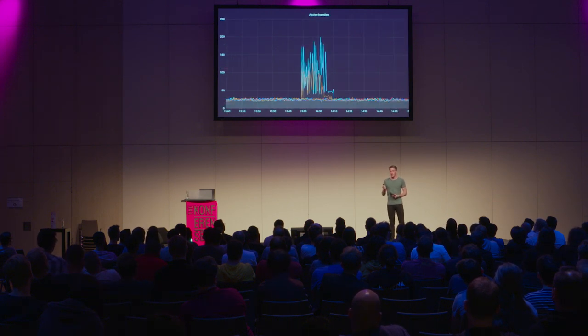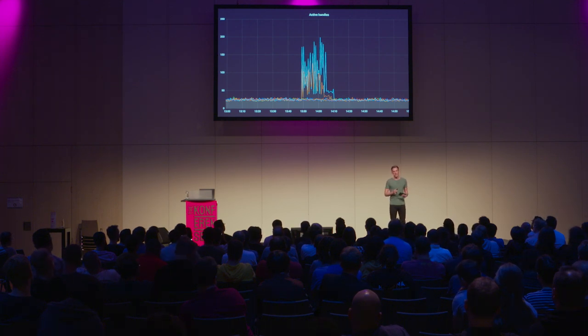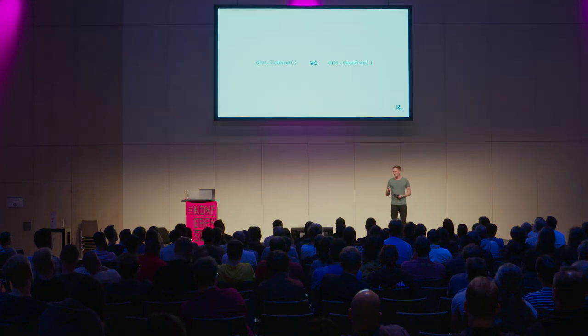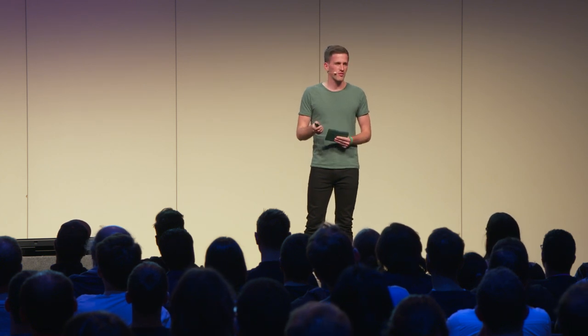This also explains why we have so many active handles — we're receiving incoming requests at a high rate but we're not able to serve them quickly enough. So how do we fix it? Node has a couple of ways of doing DNS lookups. The first way is the default: lookup, which happens by submitting a task to the worker pool. There's another way — resolve — which actually defers to the operating system and does not block the pool. It is possible to configure which way you want to use, though you should do so with caution because there are some differences to consider.